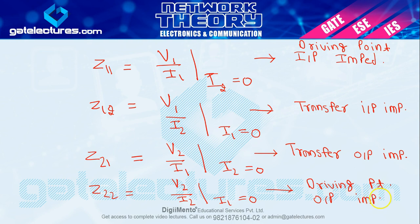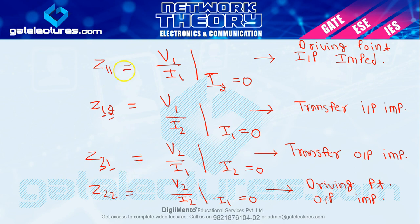There is no need to memorize this — it is simple logic. For Z12: Z means impedance (voltage/current). The subscript 1,2 means V1 upon I2. The first subscript gives the numerator, the second gives the denominator. Similarly: Z21 = V2/I1, Z22 = V2/I2, Z11 = V1/I1. You can directly write these without referring to the equations each time. This covers the definitions of the Z parameter.